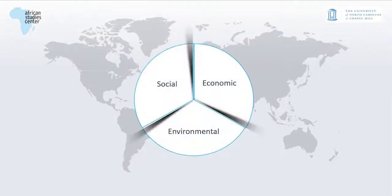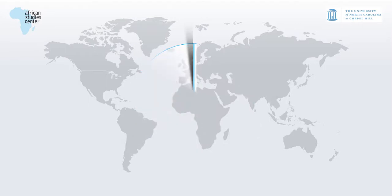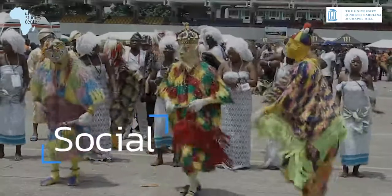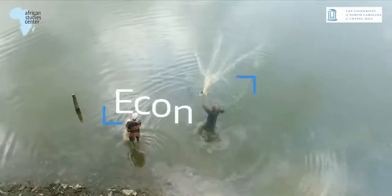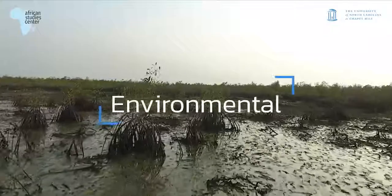The goals integrate all three aspects of sustainable development: social, economic, and environmental.